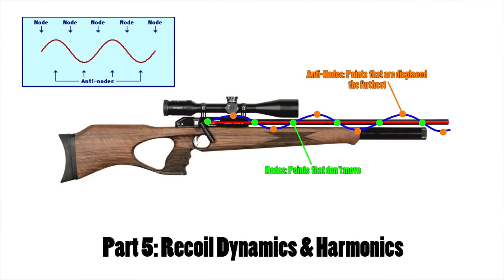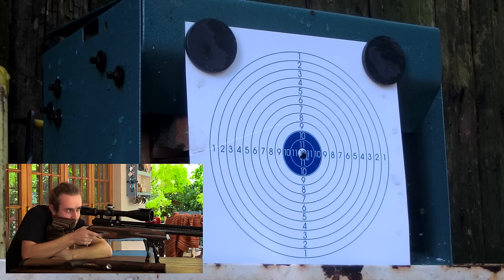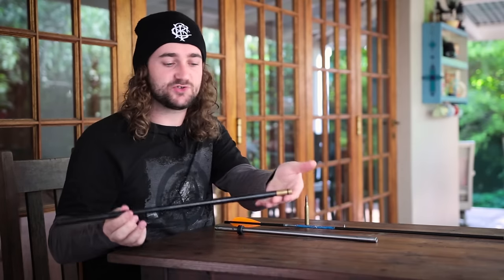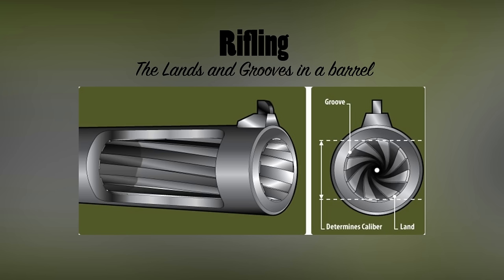Hello and welcome to the Airgun Ballistics 101 series. In the previous video we took a look at recoil dynamics and harmonics, which was quite a complicated topic, but today's topic is probably even more complicated. I'd really suggest listening very carefully and perhaps taking some notes. We're going to be talking about barrels and twist rates today, and while this topic still technically falls under the internal ballistics section, we are going to be dabbling in quite a bit of external ballistics.